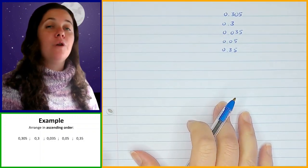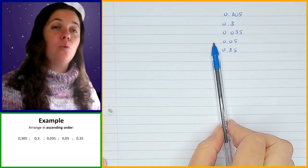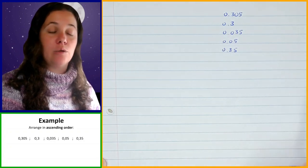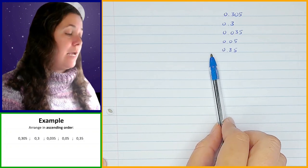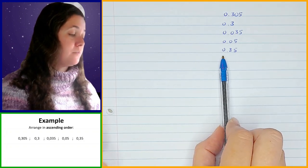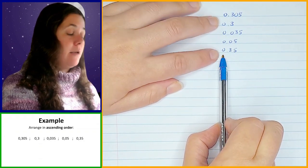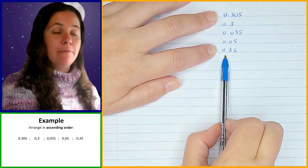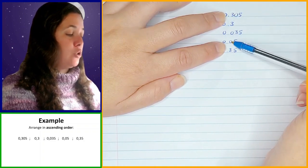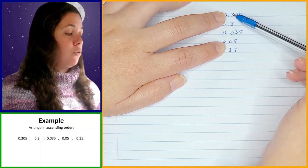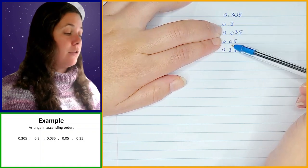So in order to arrange these in ascending order — remember that means from smallest to biggest — I need to compare them and see which one is the smallest, which is the next, and so on. Remember we're going to be looking from the left and moving towards the right. If I look at the left, all of them have got a 0 in the ones position, so based on the ones position they all have the same value. Now we go on to the tenths position: these ones have got 3s and these two have got 0s, so these two are going to be smaller than those.